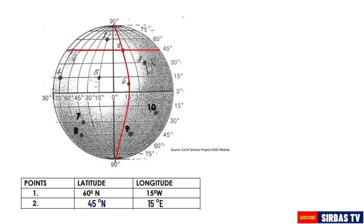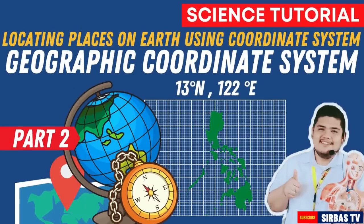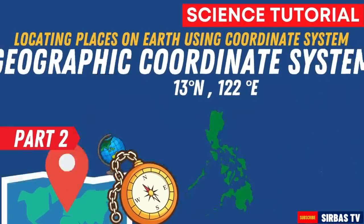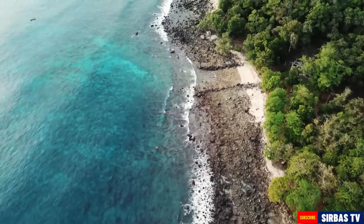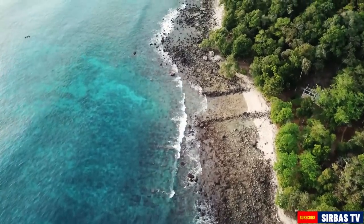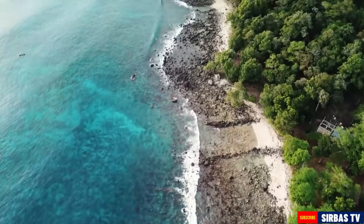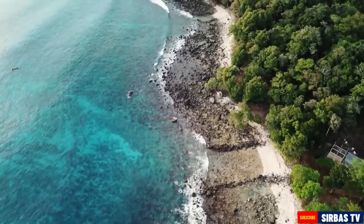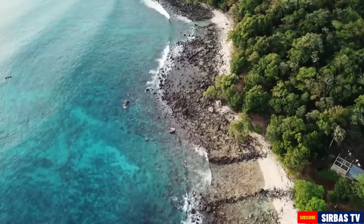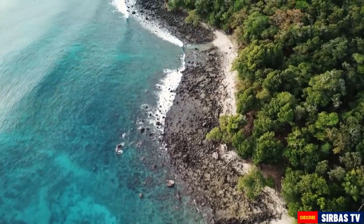And those are the steps that we need to follow in finding places on Earth using the geographic coordinate system. Aside from landmasses, you can also find bodies of water using the geographic coordinate system. In our next lesson, we are going to find the location of the Philippines using landmasses and bodies of water that surround it.